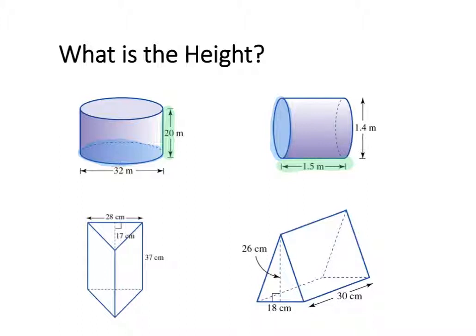For the triangular prism, the base is the triangle on its end and the height is running from the base of the shape up to the top. In the second example, the triangle base is on the end, and again the shape has been rotated 90 degrees, so the height is running along the bottom of the shape. It's important to remember that the base and the height don't change even when the shape is not standing with the base on the bottom — the height is always running from the base up to the top, even when the 3D shape is on its side.